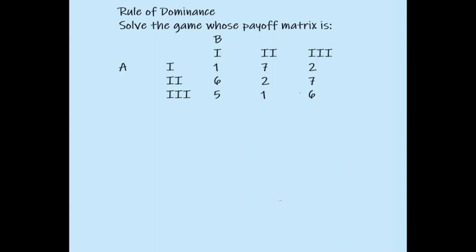This is a zero-sum game — if 1 is the gain by player A, then 1 is the loss by player B. Similarly, if 7 is the gain by player A, then 7 is the loss by player B. From A's point of view, A will play the strategy where his or her gain is maximum.